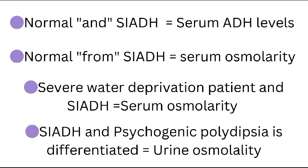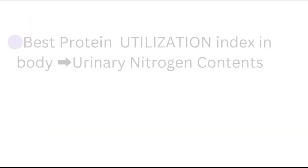Normal individuals and SIADH patients can be differentiated by serum ADH level. A normal individual from an SIADH patient is further tested by serum osmolarity. A patient with water deprivation can be differentiated from SIADH on serum osmolarity, while SIADH and psychogenic polydipsia are differentiated on urine osmolality.